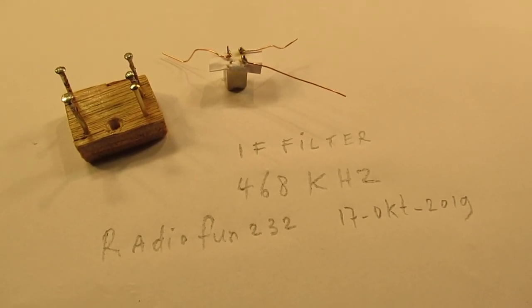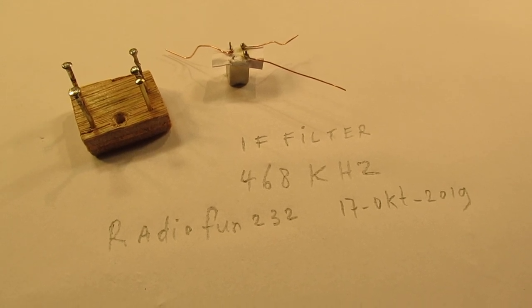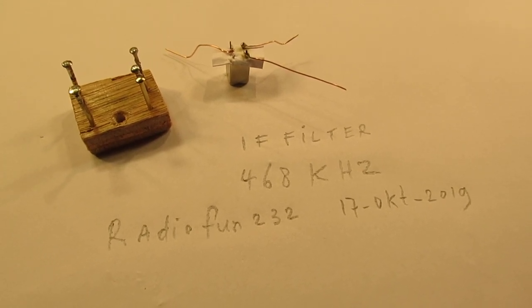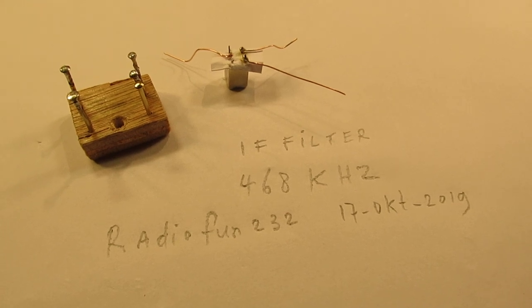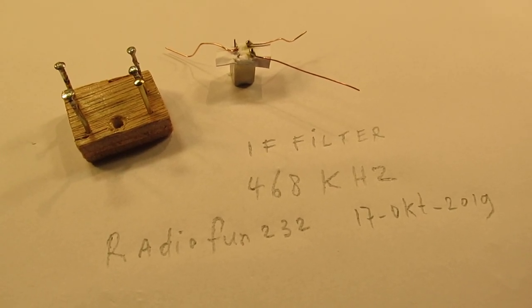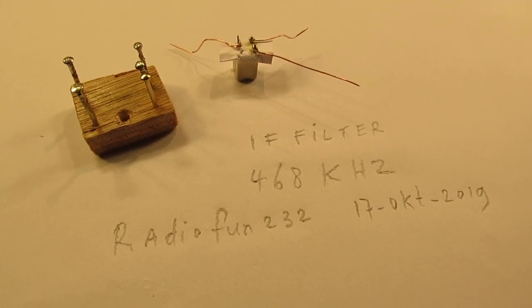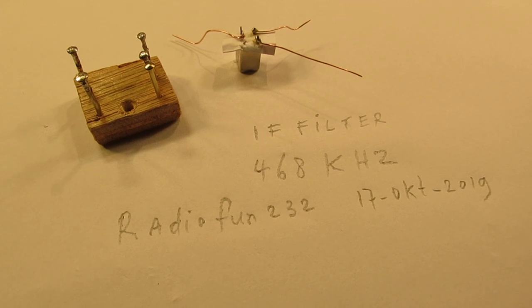Perhaps it's interesting to show how I make an IF amplifier. In this case with two small IF filters, coil filters, both on 4.6 to 8 kHz.